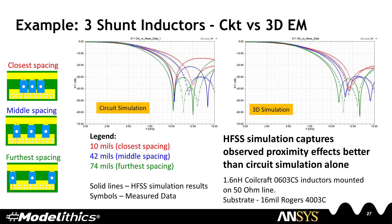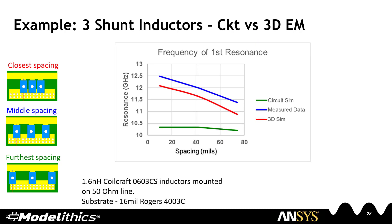In this example, three shunt inductors are placed on a 50 ohm line. The circuit simulation results shown with solid traces suggest that not much of a shift is occurring as the inductor spacing is varied. Compare this to the measured data shown with the red, blue, and green symbols — a noticeable shift is occurring in the first resonance due to proximity effects. The 3D simulation on the right-hand side is capturing this shift in the first resonance. This plot tracks the frequency of the first resonance: the green trace shows the circuit simulation results and illustrates that circuit simulation is not capable of predicting any shift due to proximity effects, whereas the measured data and 3D simulation both show a clear shift as the spacing between components is changed.